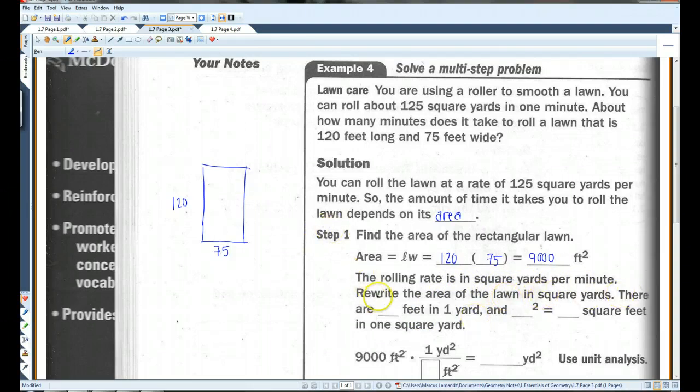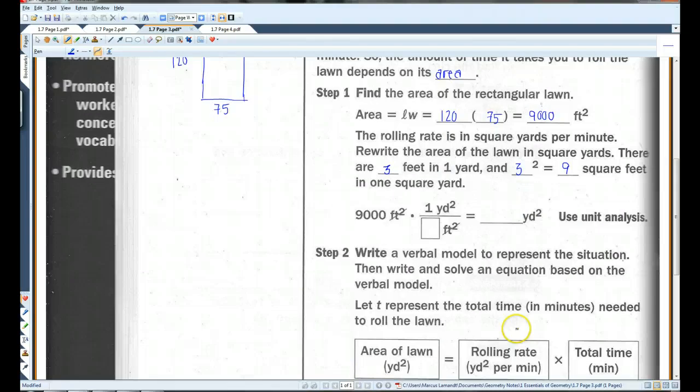There are 3 feet in 1 yard. 3 squared is 9 square feet in 1 square yard. So, there are 3 feet in 1 yard. There's 9 square feet in 1 square yard because 3 squared is 9. So, 9,000 feet squared. We know that there's 9 square feet in 1 square yard. So, this is 1,000 square yards.